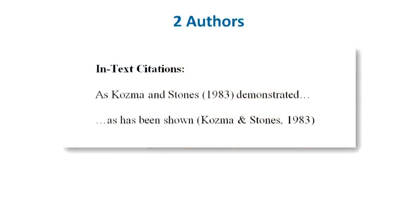In the text, you don't need to include authors' initials. When a source has two authors, cite both last names every time you reference it in your text. In a sentence, spell out the word AND. In parentheses, use the symbol for AND.